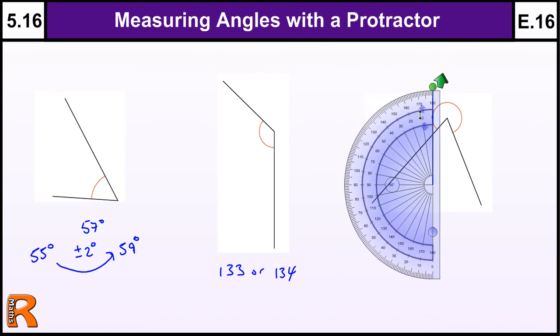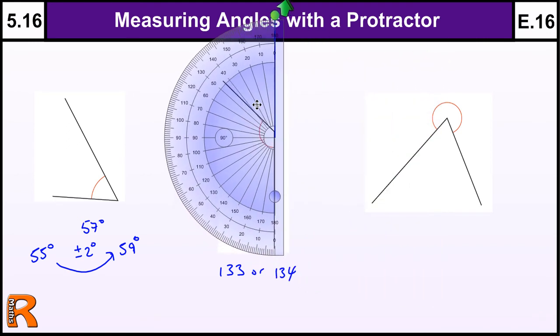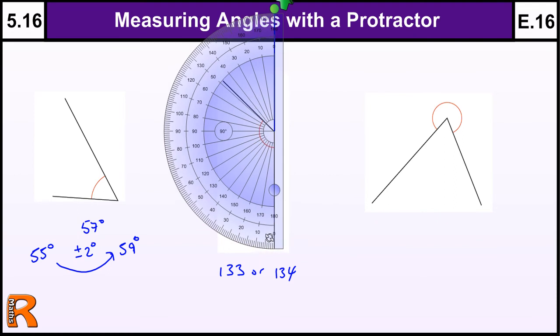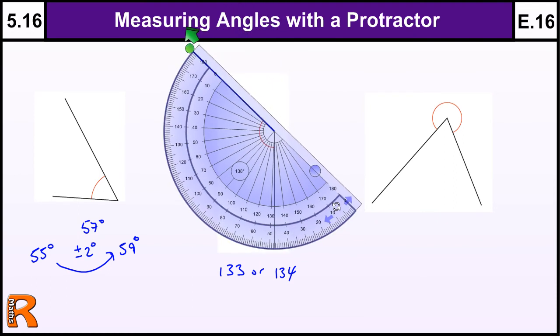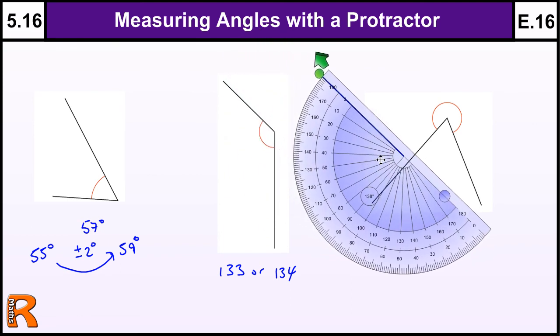But you've got to get your protractor on the end of the line. Now let's go back to this one again, if I've done it the other way, so I've measured from that line to this one, I measured around, to go around the outside, you might think it's 50 something or 40 something, but it's not because we're going around on the inside. So first of all, look at the angle, give yourself a rough idea what it is before you start, and then you shouldn't make a mistake.